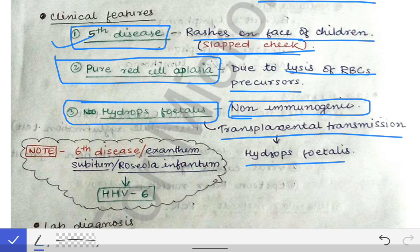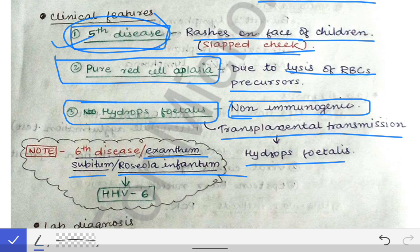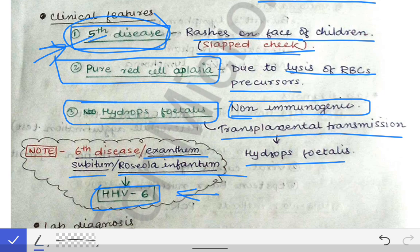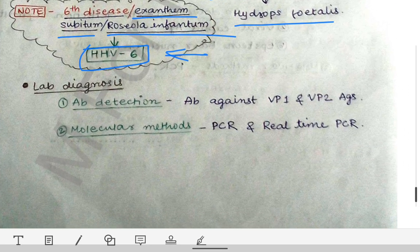Transplacental transmission leads to hydrops fetalis. Now, as we talked about the fifth disease, we also need to know about the sixth disease. The sixth disease is otherwise known as exanthema subitum or roseola infantum, and it is caused by human herpes virus 6. Remember: fifth disease is caused by parvovirus B19, and sixth disease is caused by human herpes virus 6.